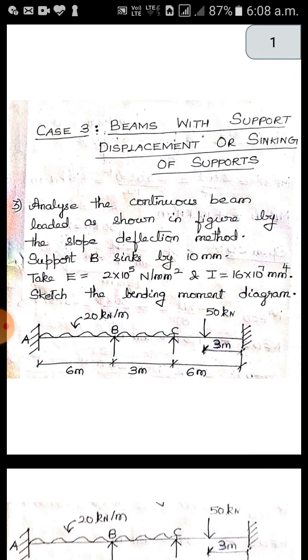Analyze a continuous beam loaded as shown in figure by slope deflection method. This is the important part. Support B sinks by 10 mm. It is given in the problem itself. Take E equal to 2 times 10 power 5 newton per mm squared and I equal to 16 times 10 power 7 mm power 4. Sketch the bending moment diagram.